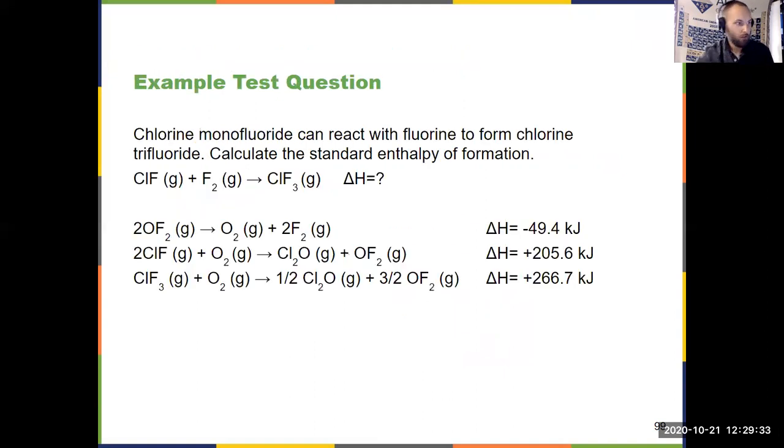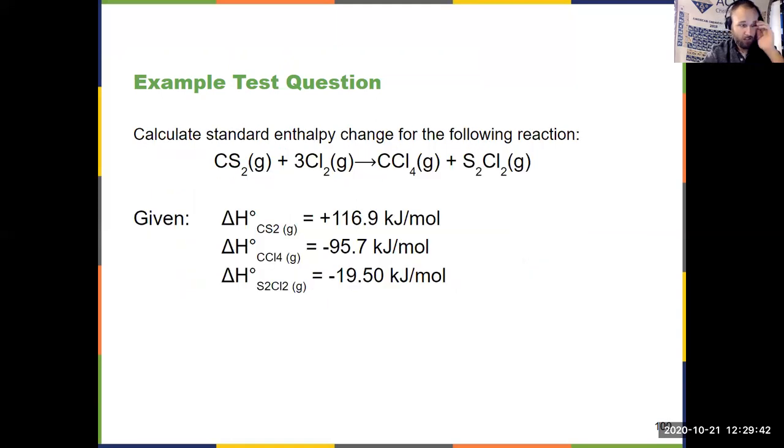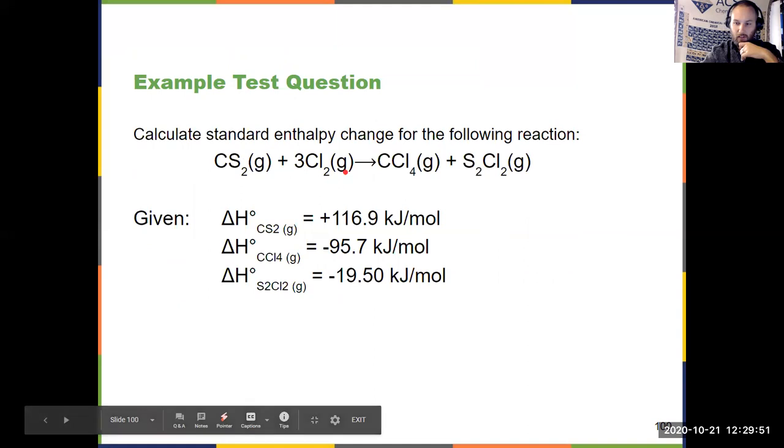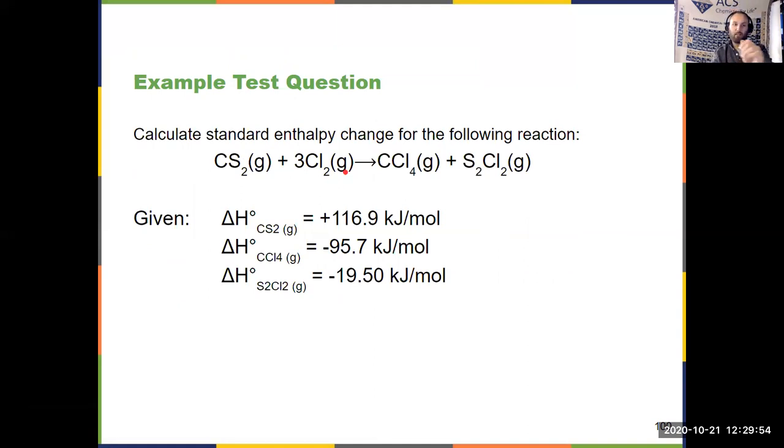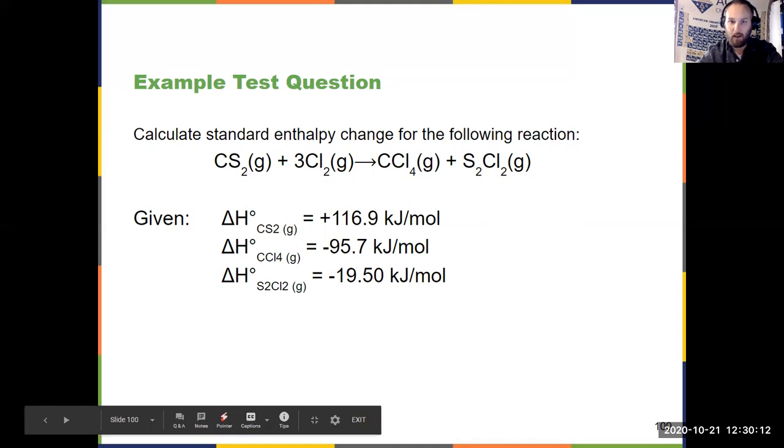We finish the chapter with a couple example problems. Here's another one asking you to use the first application of Hess's law on slide 99. Here's another one asking you to use the second application of Hess's law. Notice in this situation, there's no delta HF given to you for gaseous chlorine, because that's an element in its most standard state. So the value is zero. You can find videos on Blackboard showing how both of these problems are solved. So definitely pause the videos and try them on your own first, because these are going to definitely appear on your test. Hess's law is one of the biggest ideas from Chapter 5, and the two applications are the key takeaways from this video. Thank you.